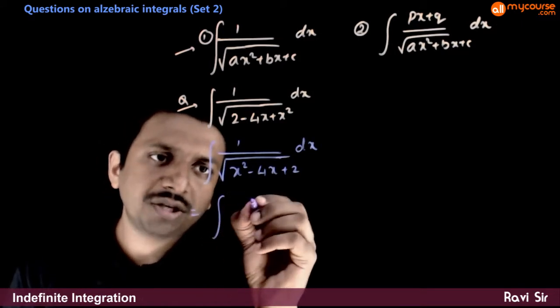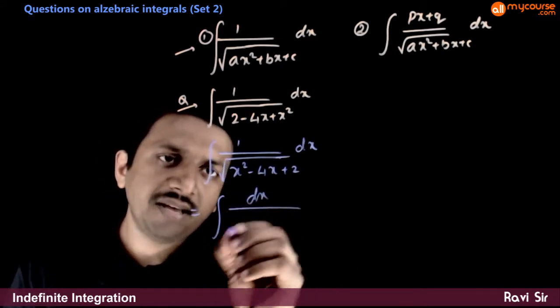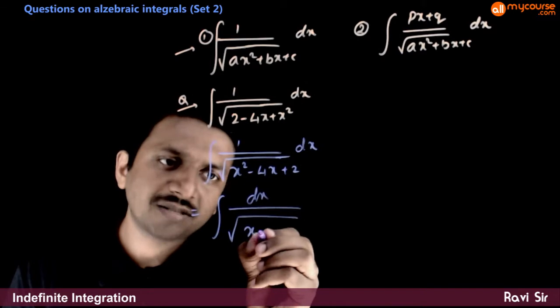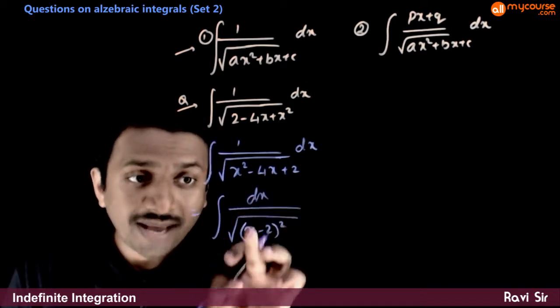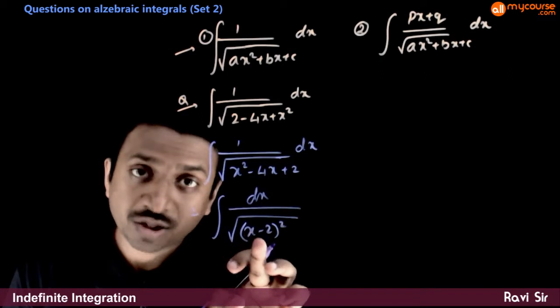that is equal to integration of dx by root of x minus 2 whole square. So, x square minus 4x can be adjusted in x minus 2 whole square.